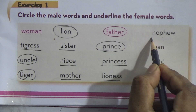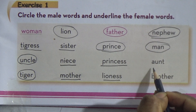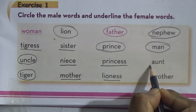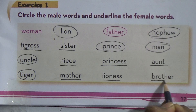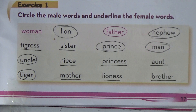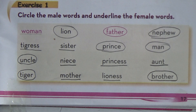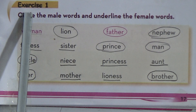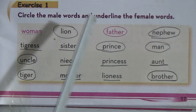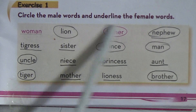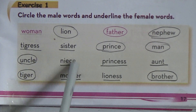Nephew is male. Man is male. Aunt is female, so it would be underlined. Brother is male, so brother would be circled. So this is all about Exercise 1. I have circled all the male words and underlined all the female words.